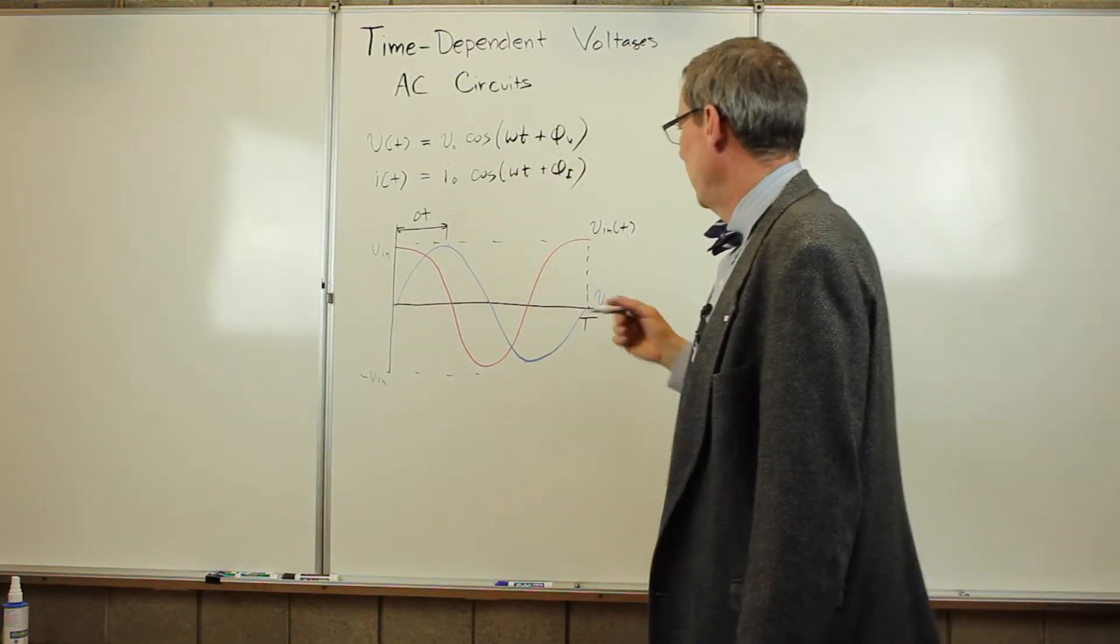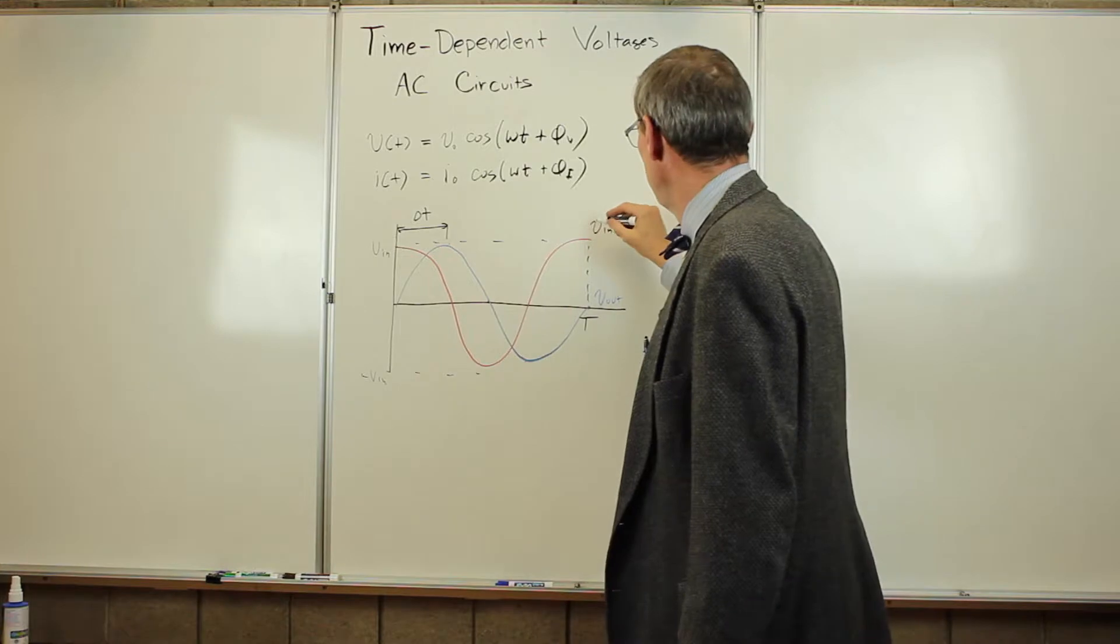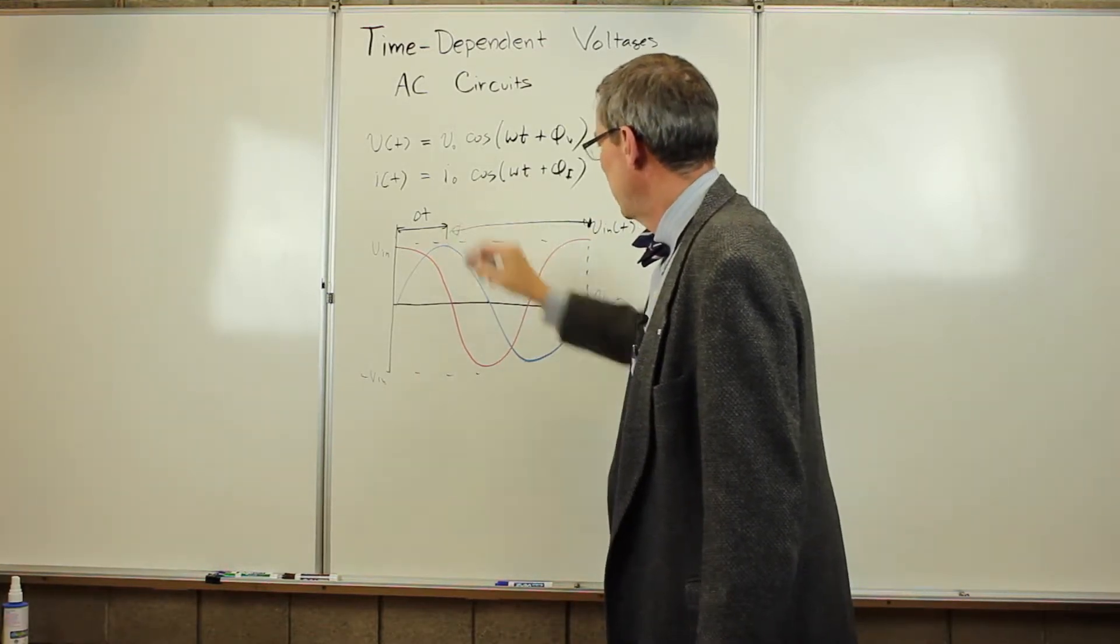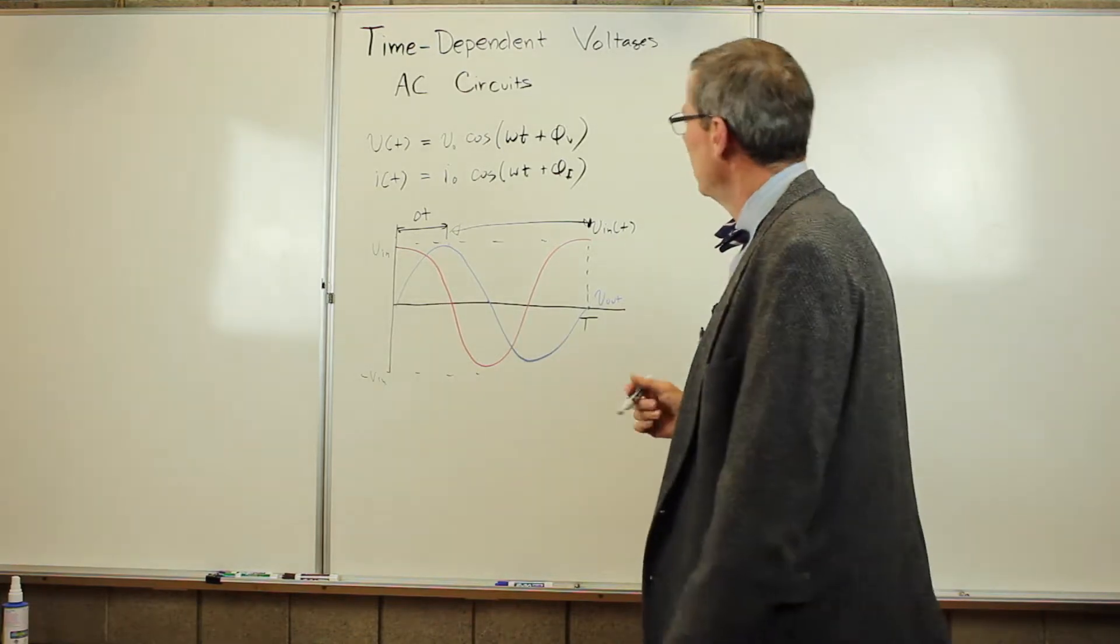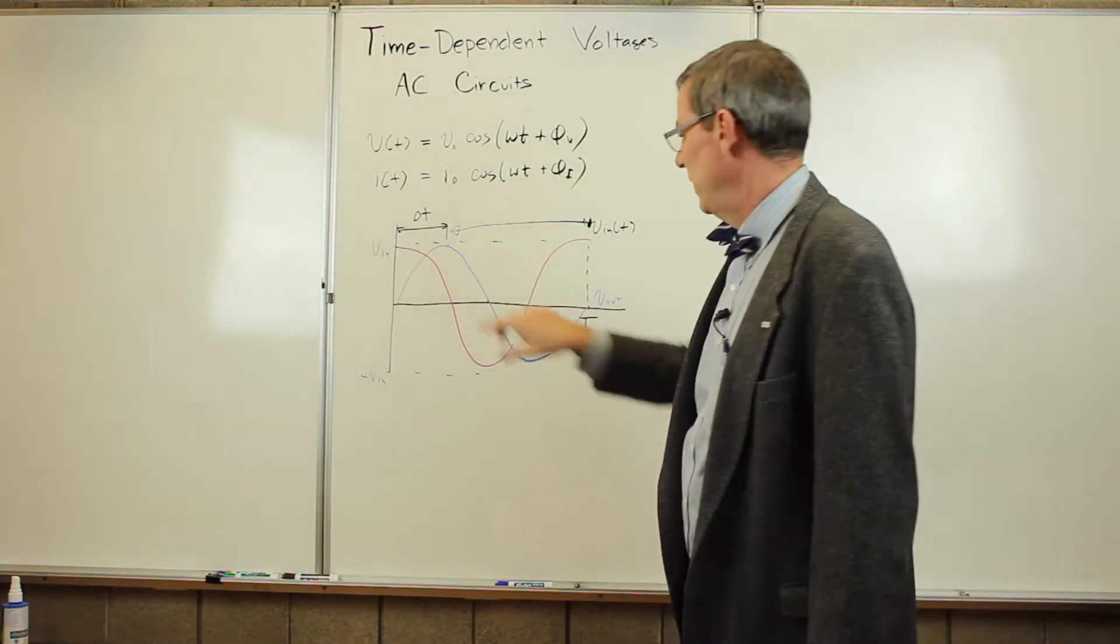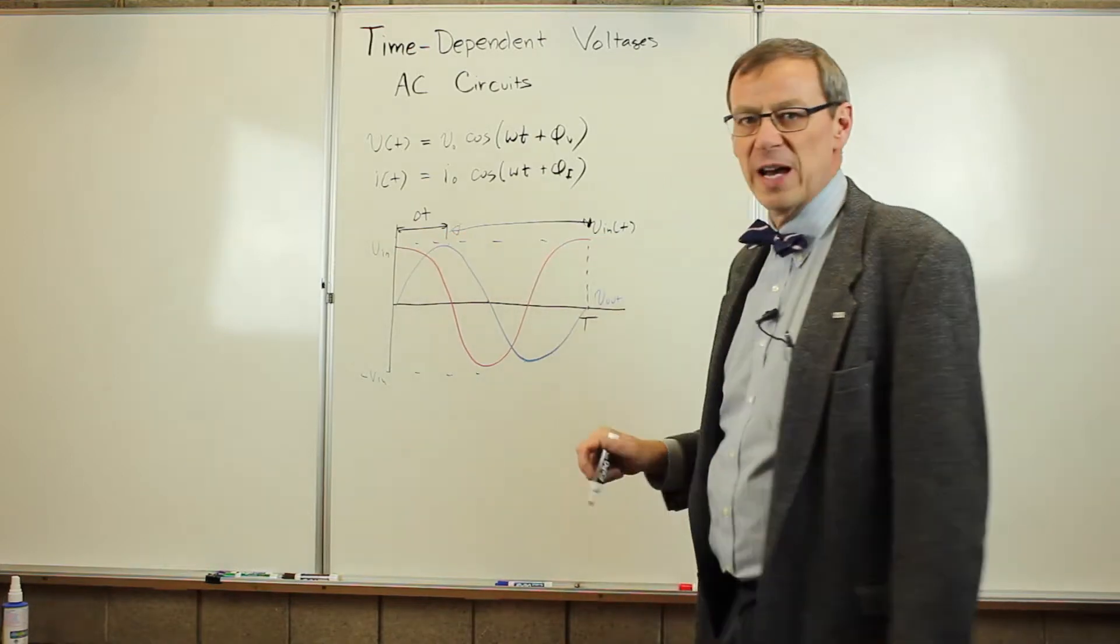So there's some delta t. And you could immediately tell me, well, why didn't you go from that peak over to here? And of course, that would also be absolutely correct. But the convention is we're going to take the shortest distance between two peaks. So this one is clearly shorter than that one.